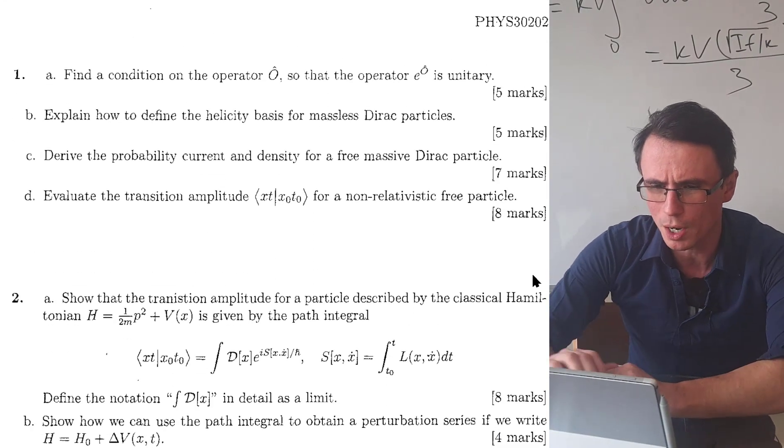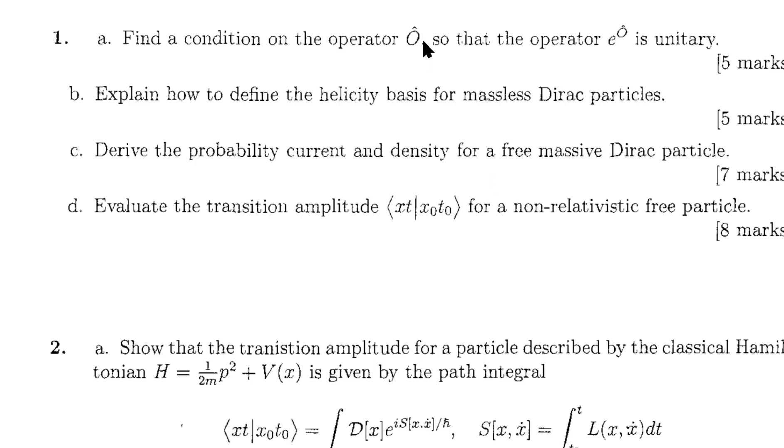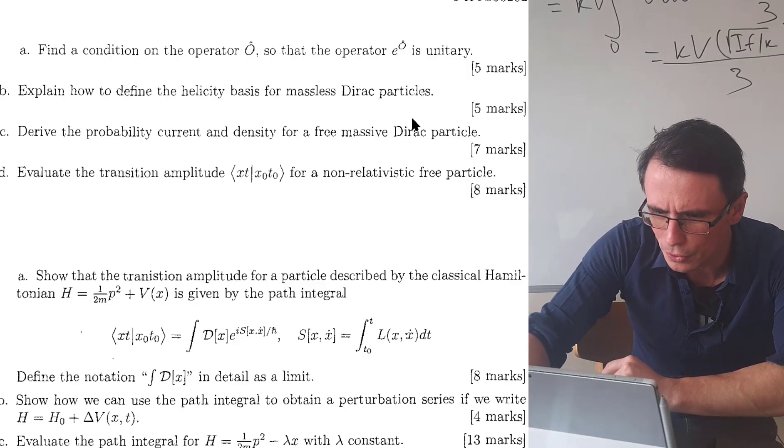Okay, question one: find a condition on the operator—I don't actually remember this operator, I think it was a symmetry operator—so the operator e to that is unitary.